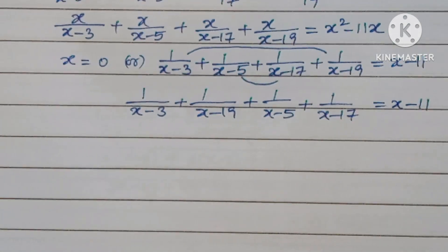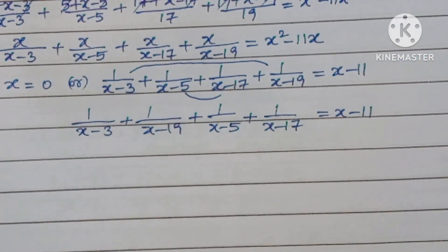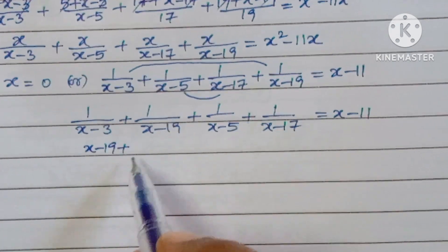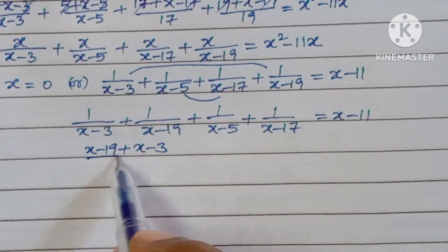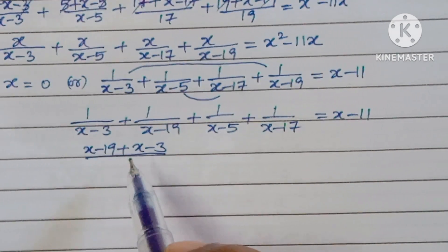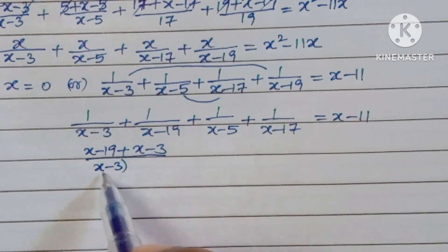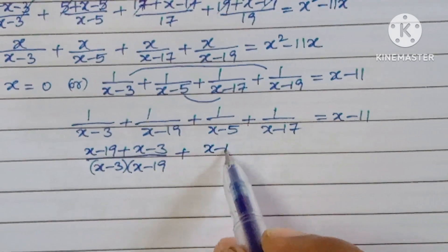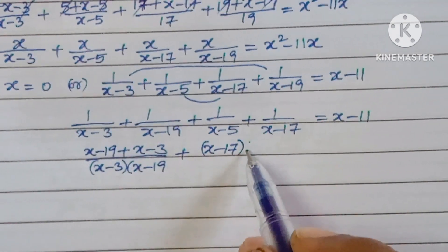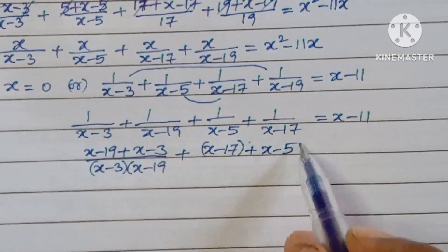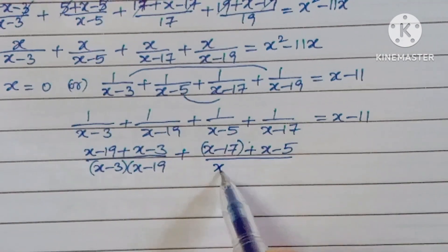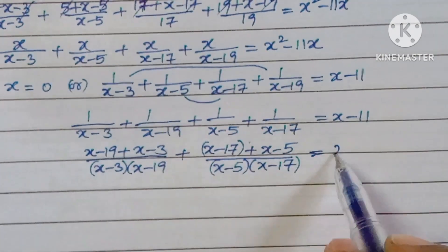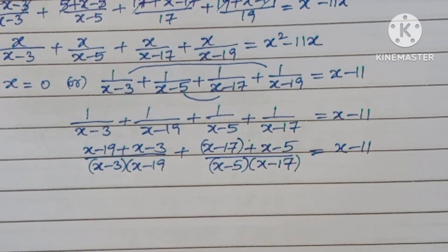Taking the LCM for each pair: the first pair gives (x minus 19 plus x minus 3) over (x minus 3)(x minus 19), and the second pair gives (x minus 17 plus x minus 5) over (x minus 5)(x minus 17), all equal to x minus 11.